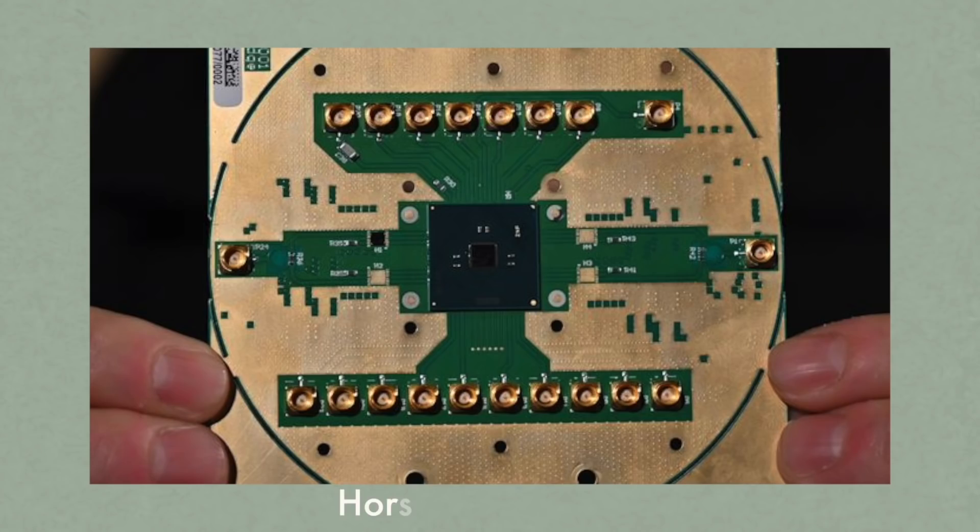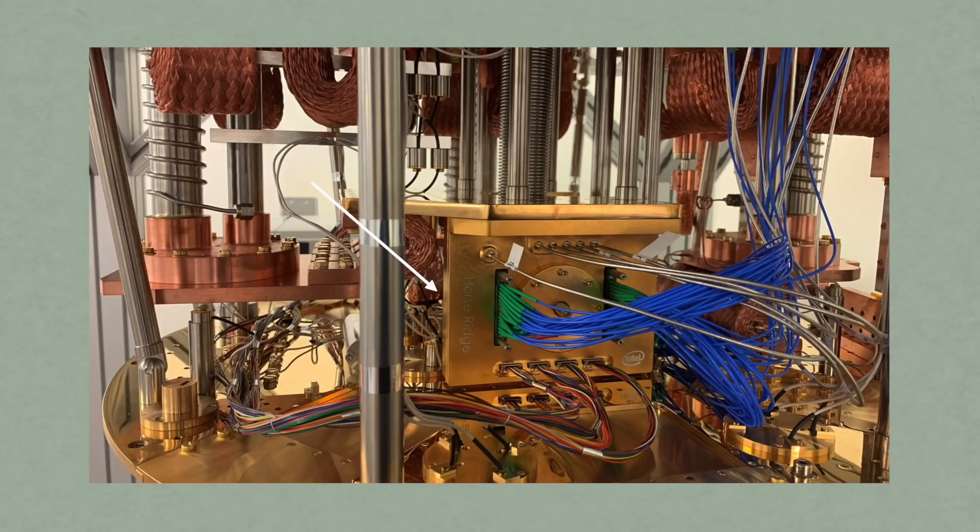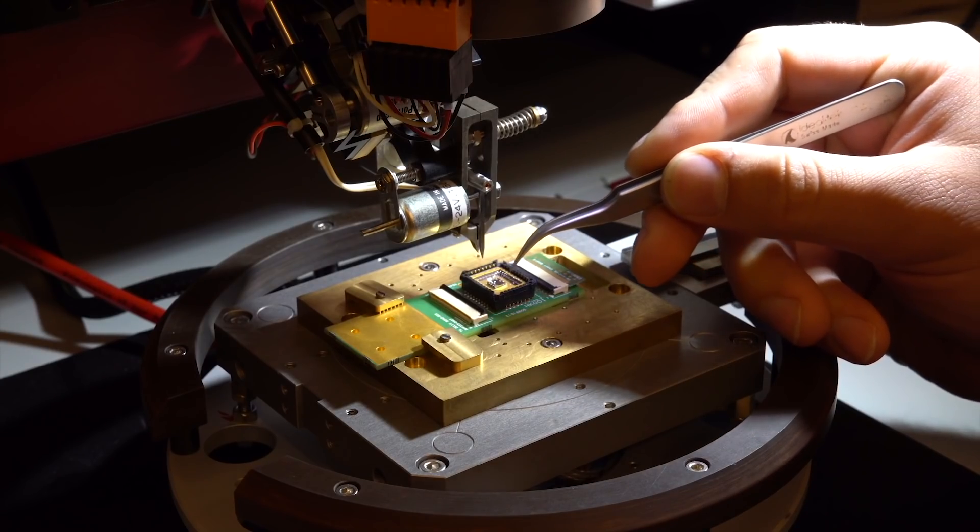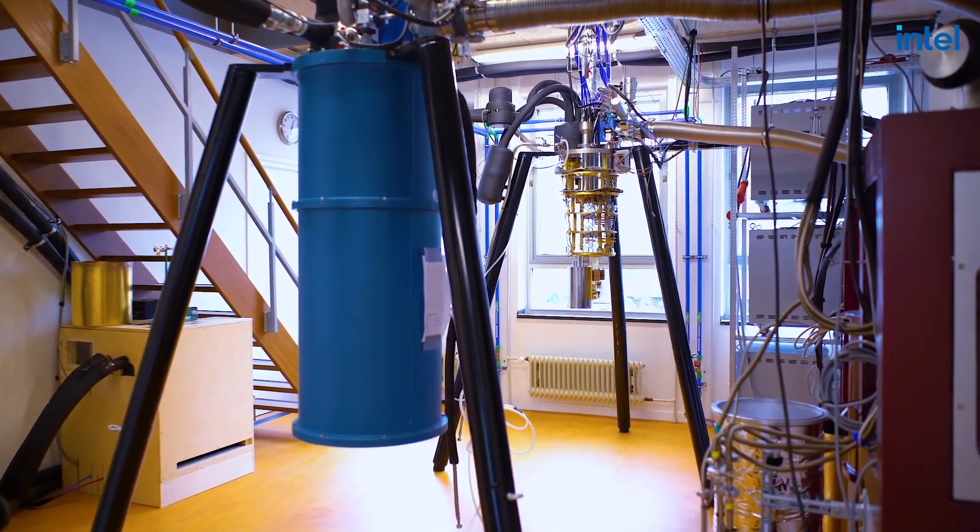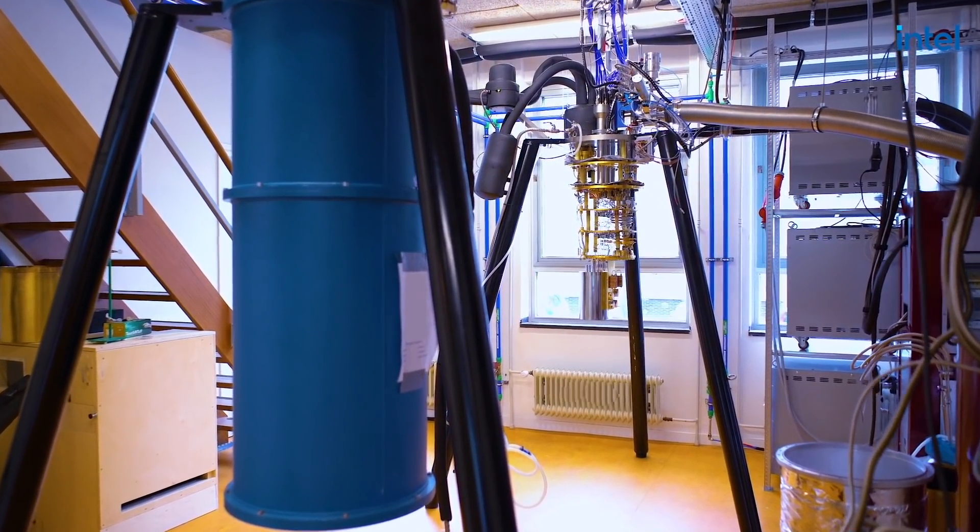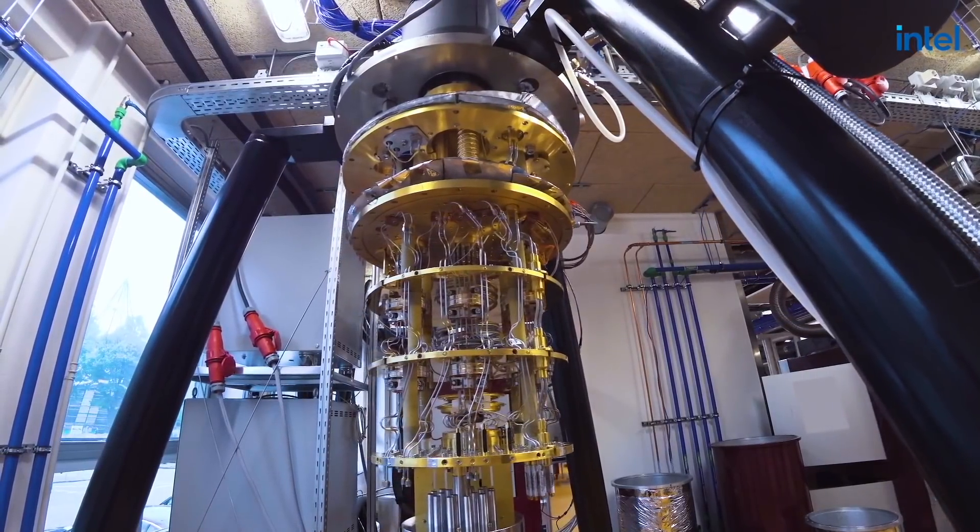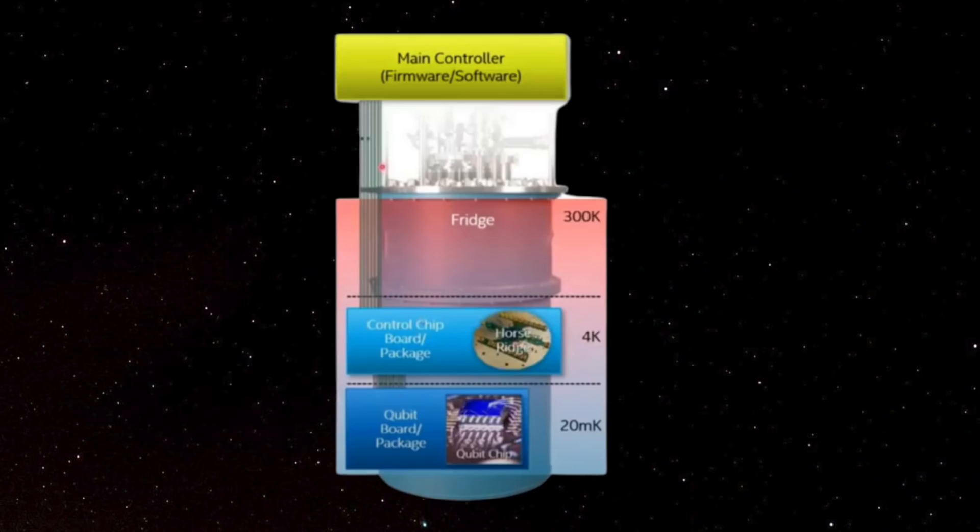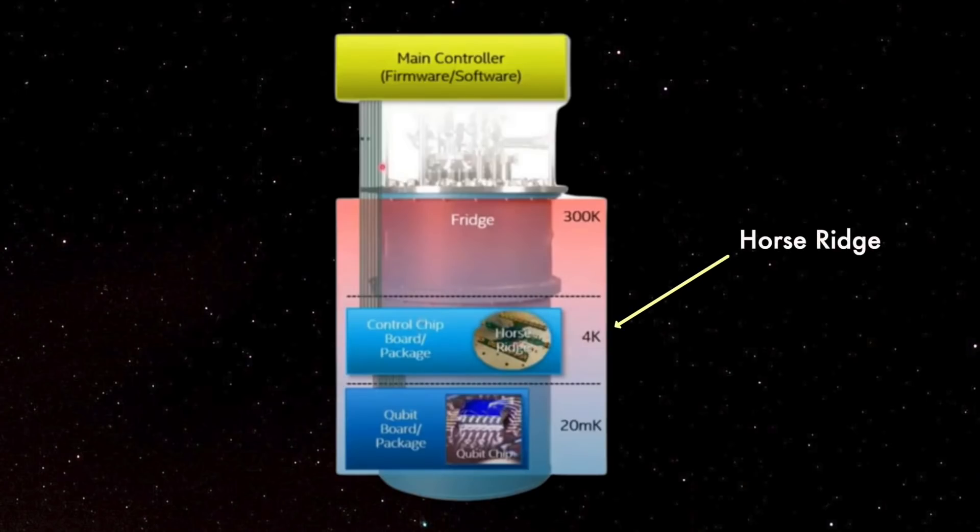For this, Intel has built a Horse Ridge SOC to control these qubits. It is fabricated using Intel's FinFET 22nm technology. So Horse Ridge has been designed to operate at 4 Kelvin in the fridge. And why this is important? Because now all the very high-precision analog signals that are needed to control and read the qubit now can be generated directly inside the dilution refrigerator, just like this is the actual setup of Horse Ridge behind me, near the qubit chip. And so this greatly simplifies all the signals that have to go basically in and out of the fridge.